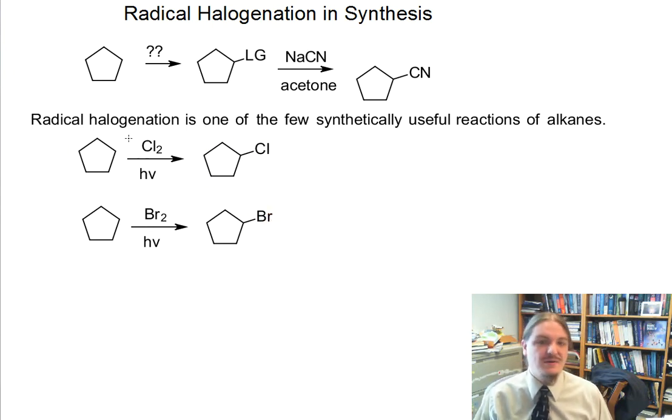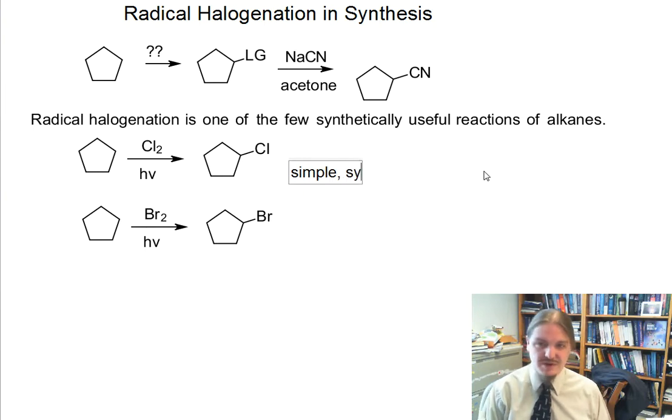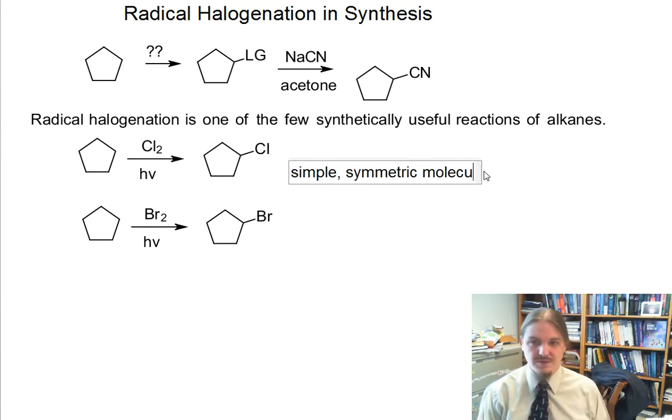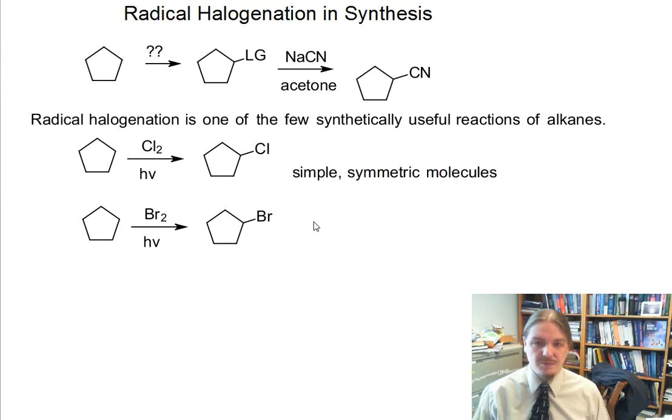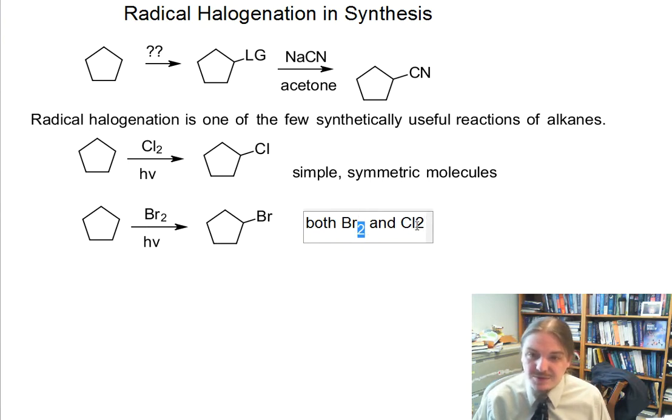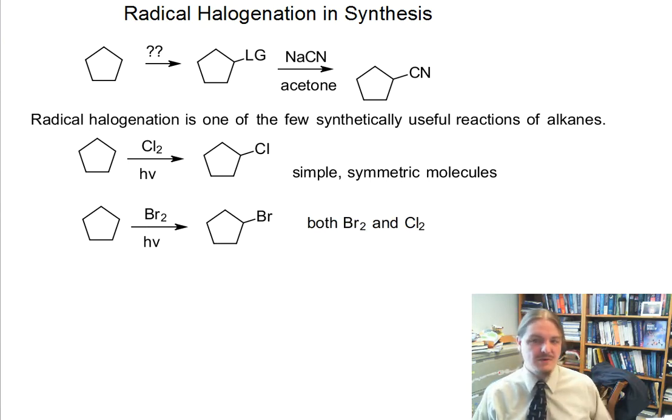They're going to generate the same kind of major product with the leaving group in the same spot. All five positions, all 10 hydrogens on cyclopentane are equivalent, so you get the same major product with the exception of the identity of the halogen. So if we're using simple and symmetric molecules, we can use both Br2 and Cl2.